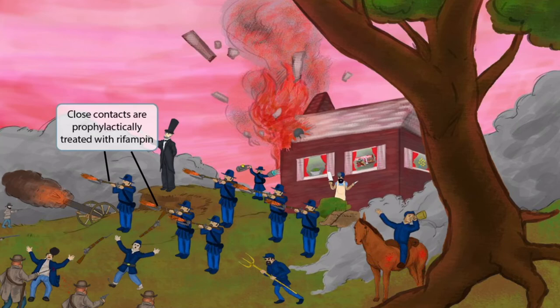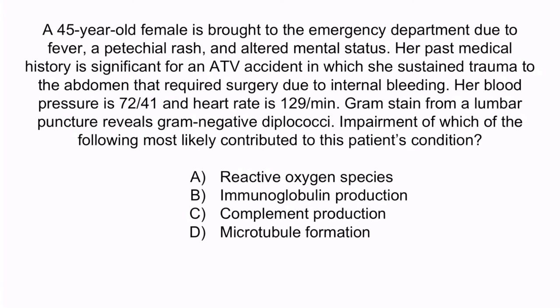Now that we've covered the image, let's review with a question. A 45-year-old female is brought to the emergency department due to fever, a petechial rash, and altered mental status. Her past medical history is significant for an ATV accident in which she sustained trauma to the abdomen that required surgery due to internal bleeding. Her blood pressure is 72 over 41, and heart rate is 129 per minute. Gram stain from a lumbar puncture reveals gram-negative diplococci. Impairment of which of the following most likely contributed to this patient's condition? A, reactive oxygen species. B, immunoglobulin production. C, complement production. Or D, microtubule formation. Hopefully from the question stem, you notice that this patient has a fever, petechial rash, altered mental status, hypotension, and labs that reveal gram-negative diplococci.